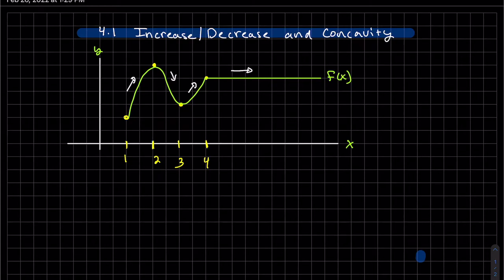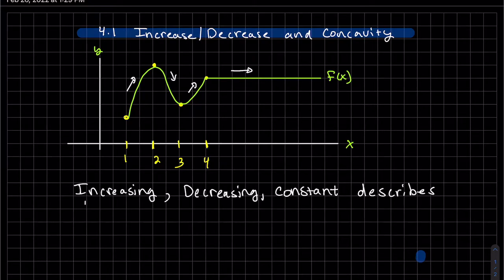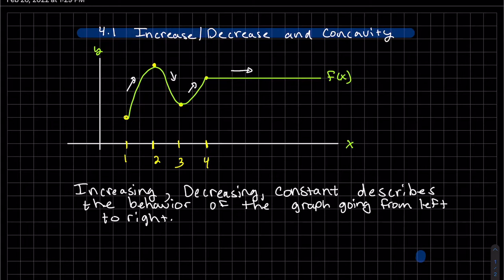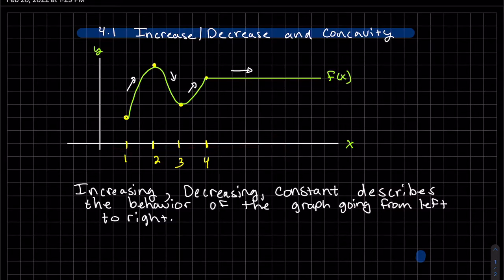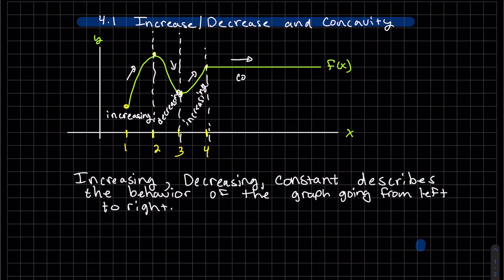This is the section on increase, decrease, and concavity. So I have a graph pictured here. Increasing, decreasing, and constant describes the behavior of the graph when it's moving from left to right. In our picture here, this section is increasing, this section is decreasing, and here we are increasing again and constant.